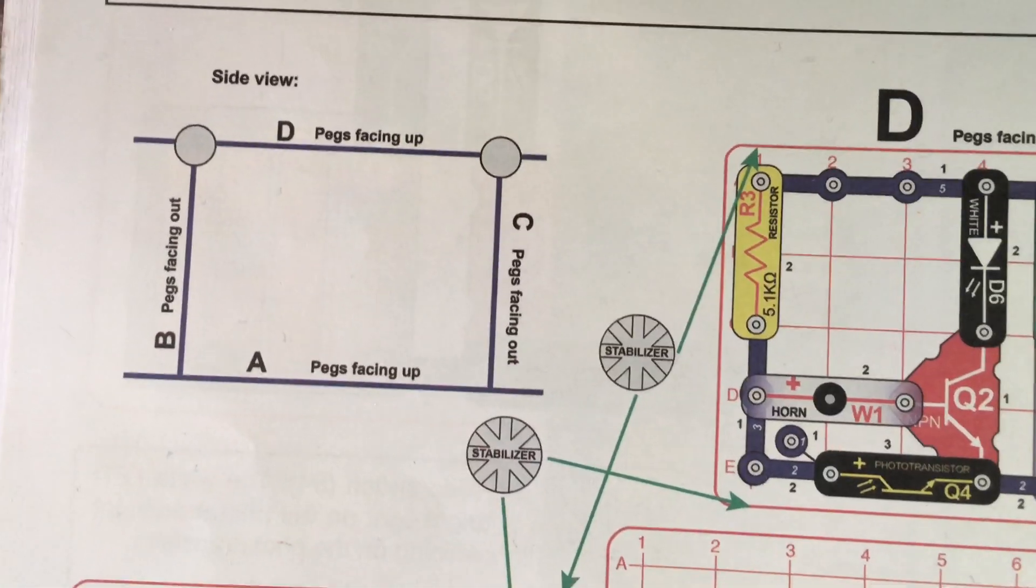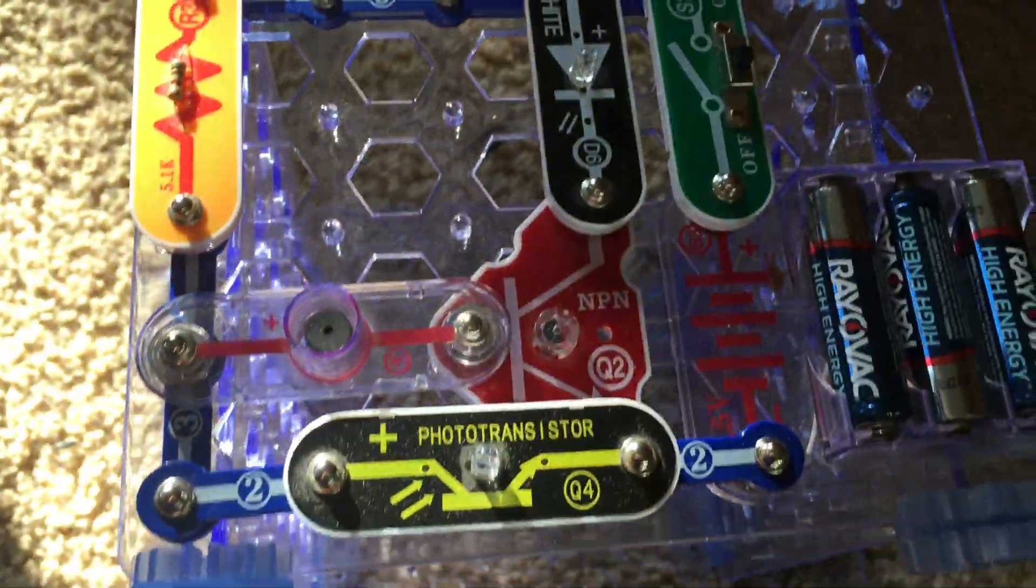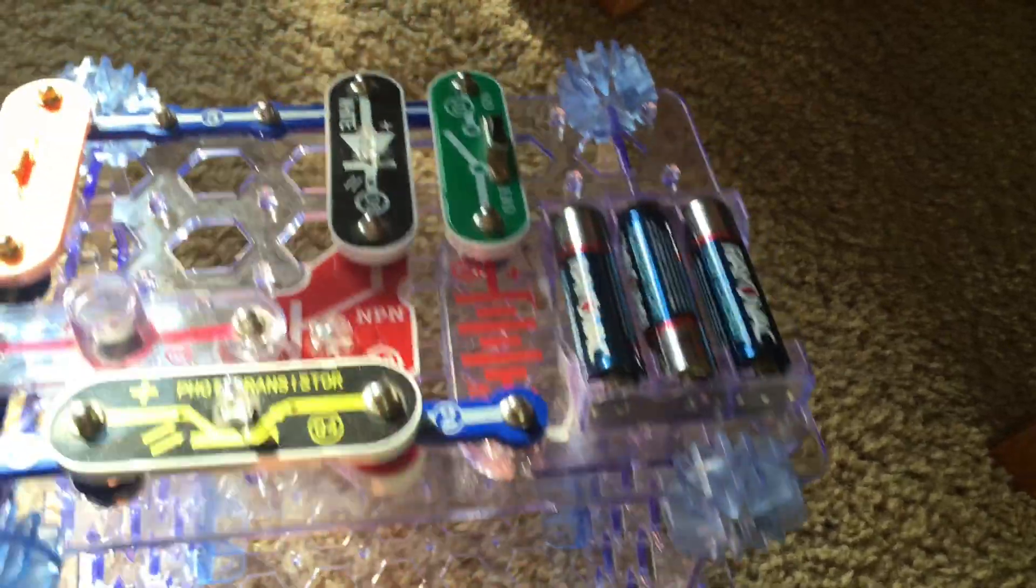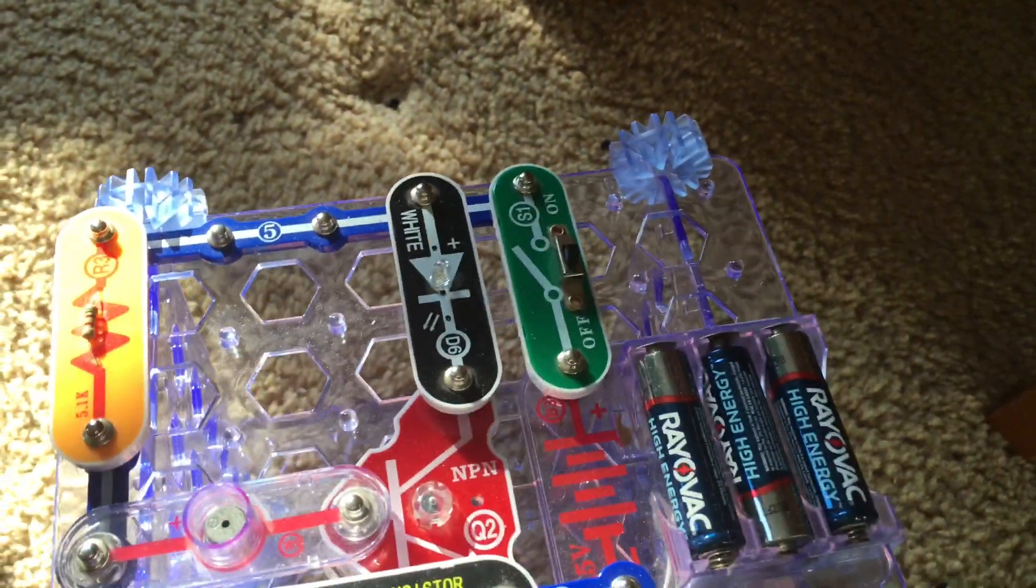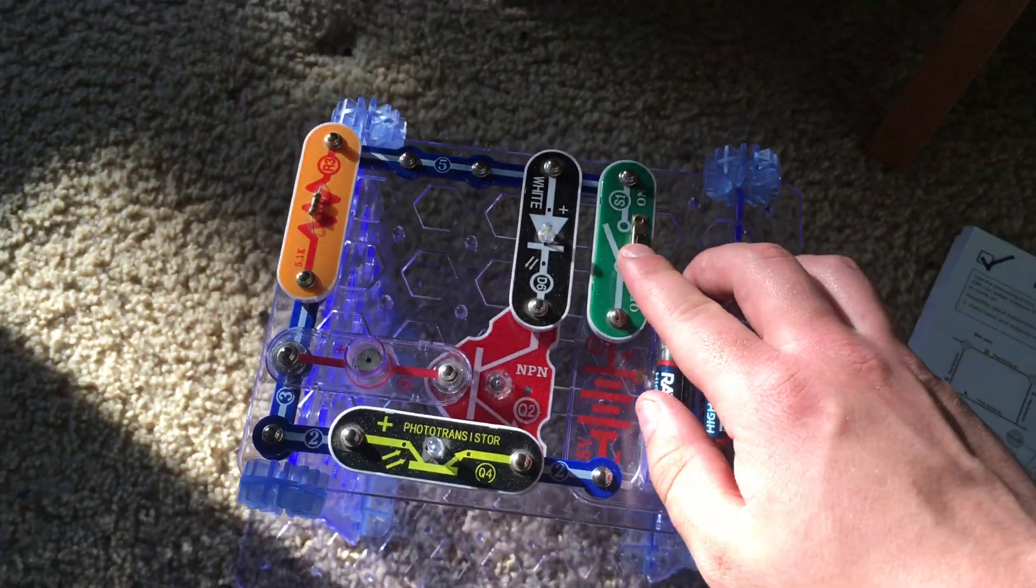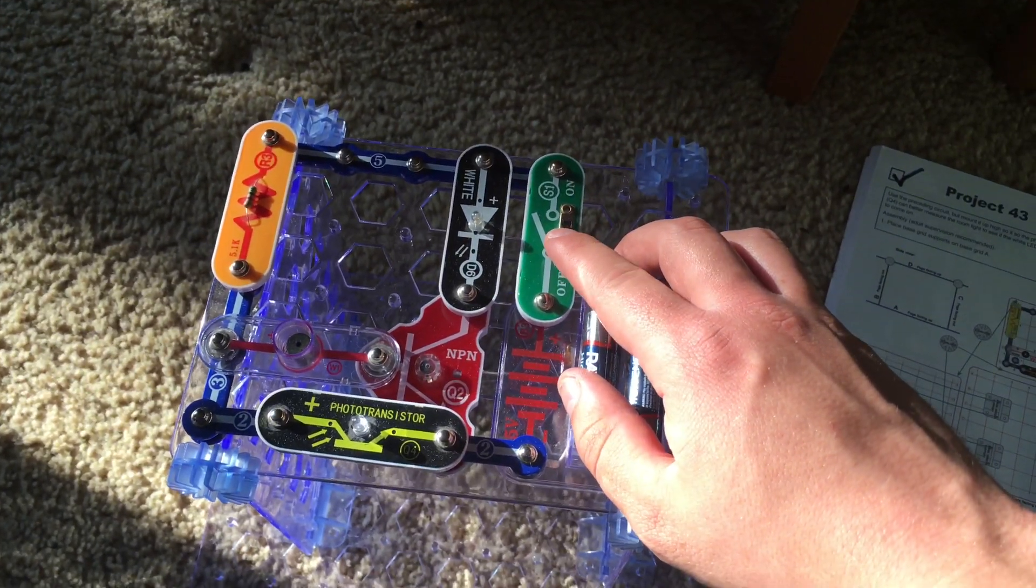The pegs will face out on all the boards, and stabilizers will hold the top board onto the lower two ones. The circuit has the same principle as the one in the previous project.